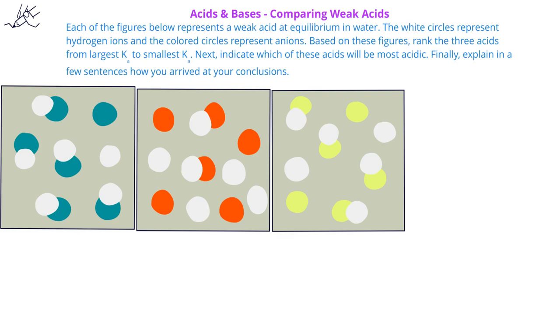In order to answer the first part of this question, we have to remember that the larger the Ka, the more products or the more dissociated ions will be present. So we have to look at these three figures and determine which of these figures has the most ionized or dissociated weak acids. In other words, which one has the most hydrogen ions and anions present.